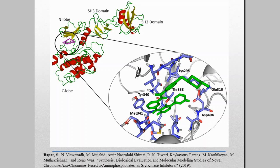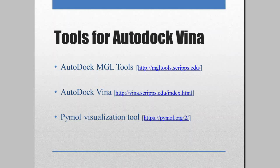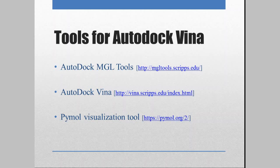For a protein-ligand docking to take place, the method we are going to use is called AutoDock Vina. There are different tools which would be required in order to perform this. One is your AutoDock MGL Tools, second is AutoDock Vina, and third is PyMOL. PyMOL is basically a visualization tool. The link for all these three tools is given in the description below, so you can go to the link and download these tools.